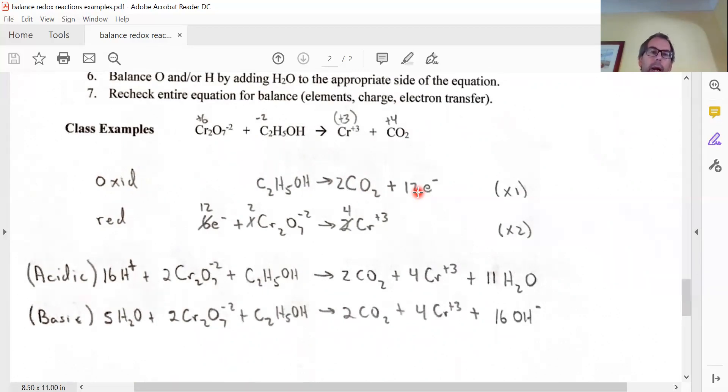Okay, let's go the other way. Cr2O7 minus two going to Cr plus three. Again, I have a two there, so I have to balance it putting a two in front right here.